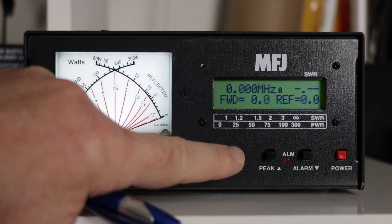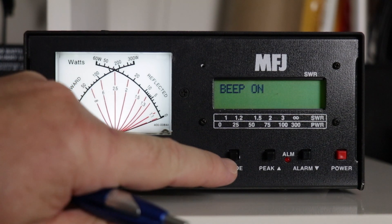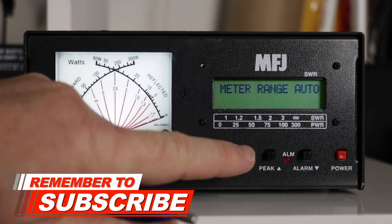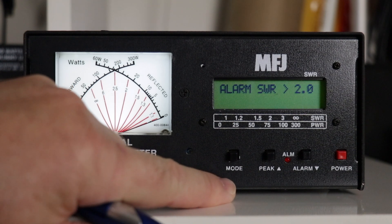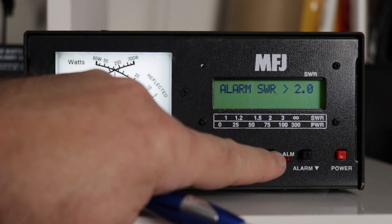The mode button gets you into the memory. Just press and hold. You can turn the beep on or off. The meter range, I have it set to auto. The alarm for the SWR goes from 1.5 all the way up to 3. Adjust that with these two buttons.